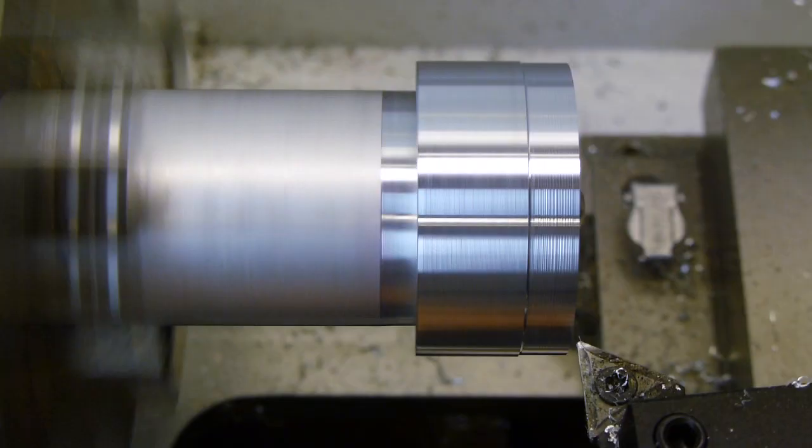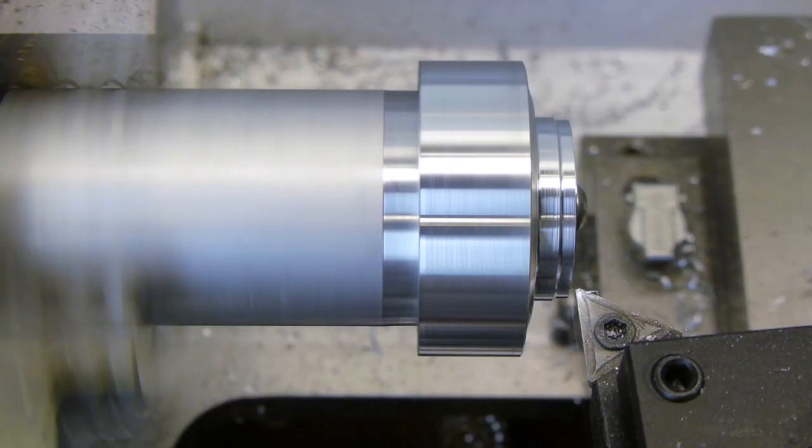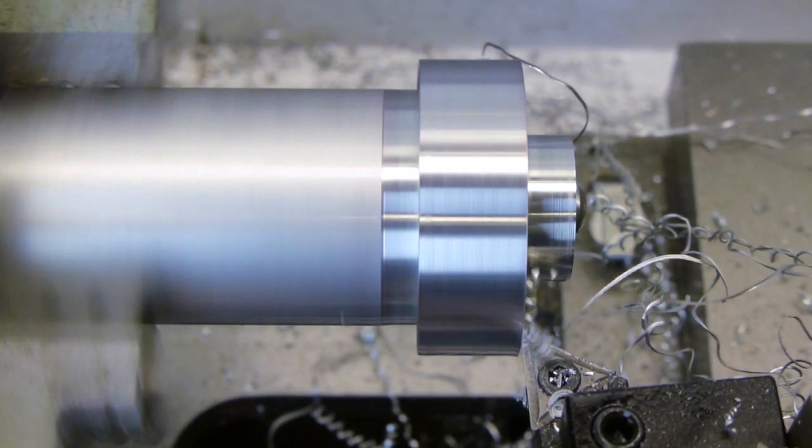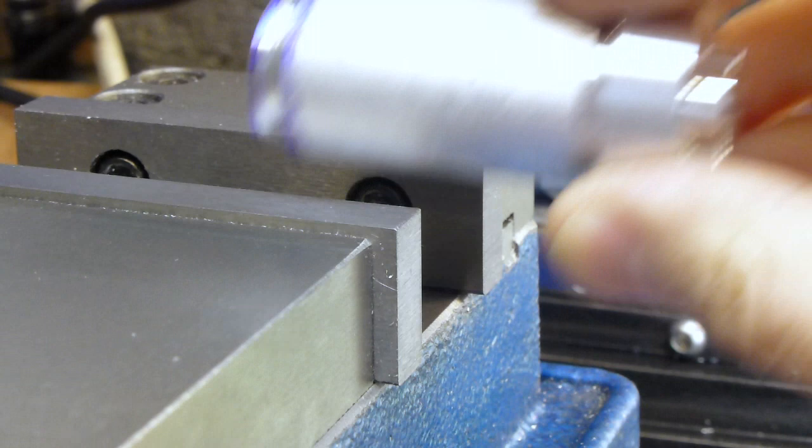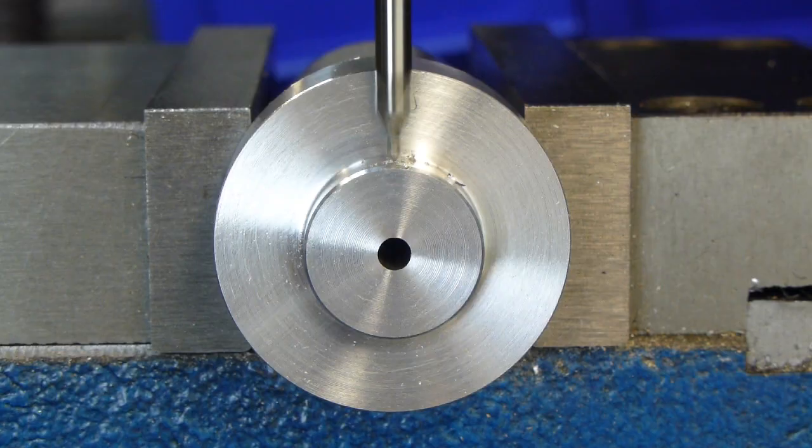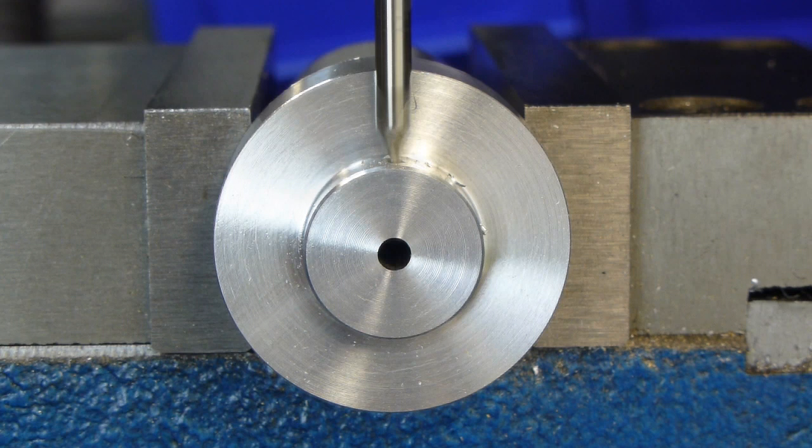I tidied up the diameter, then swapped tools and cut a reduced section on the end. The wheel and arbour were taken to the mill to drill and tap ready for a grub screw.